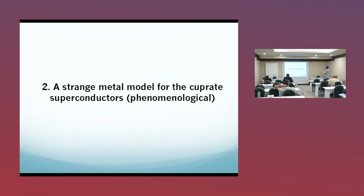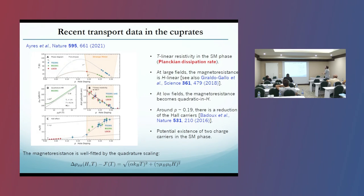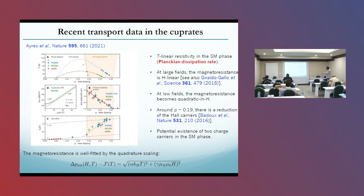Now I switch to my second topic: the strange metal model for the cuprates. Here I show some recent transport data in the cuprates by the group of Nigel Hussey and collaborators, where they see very robust evidence of a T-linear resistivity in the strange metal phase with the Planckian dissipation rate, a large-field magnetoresistance H-linear, but at low fields the magnetoresistance becomes quadratic in H. Around optimal doping there is a reduction of the Hall carriers, implying a potential existence of two charged carriers in the strange metal phase — coherent quasi-particles and incoherent Planckian dissipators.